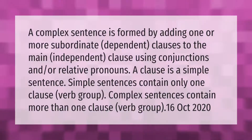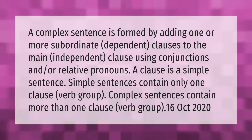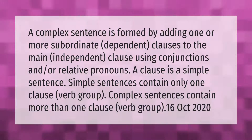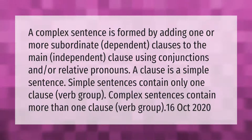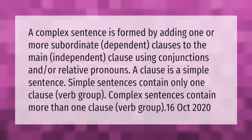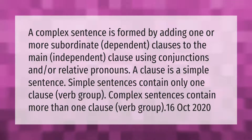A complex sentence is formed by adding one or more subordinate dependent clauses to the main independent clause using conjunctions and/or relative pronouns. A clause is a simple sentence; simple sentences contain only one clause verb group. Complex sentences contain more than one clause verb group.